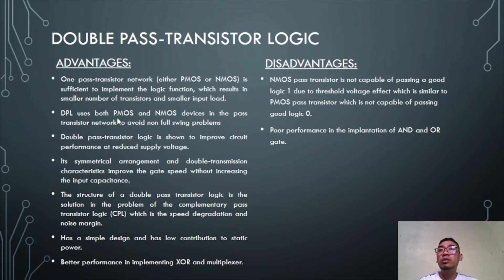DPL uses both PMOS and NMOS devices in the pass transistor network to avoid non-full swing problems. Double pass transistor logic is shown to improve circuit performance at reduced supply voltage.